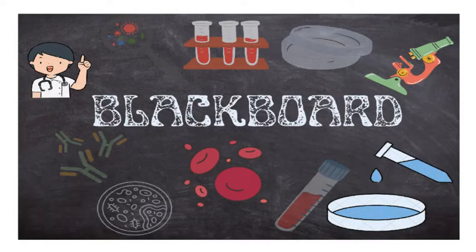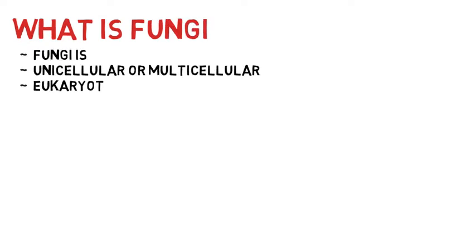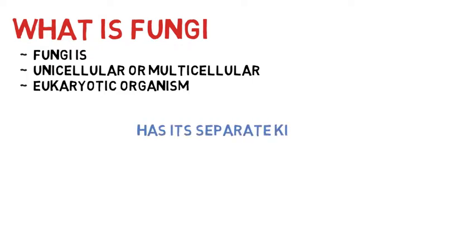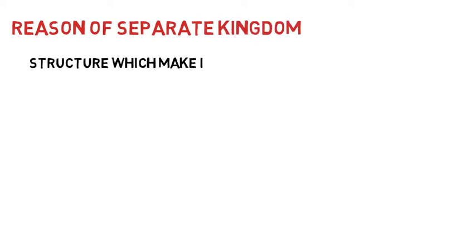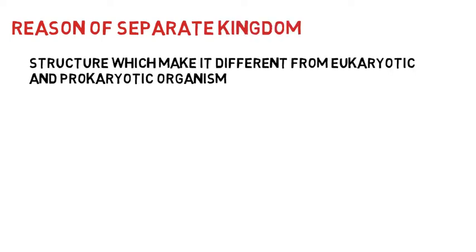Hello everyone, you are watching Blackboard. Our today's topic of discussion is fungi. Fungi is a unicellular or multicellular eukaryotic organism that has its separate kingdom — Kingdom Fungi. The reason why it has its separate kingdom is based on their structure, which makes it differ from other eukaryotic and prokaryotic organisms.